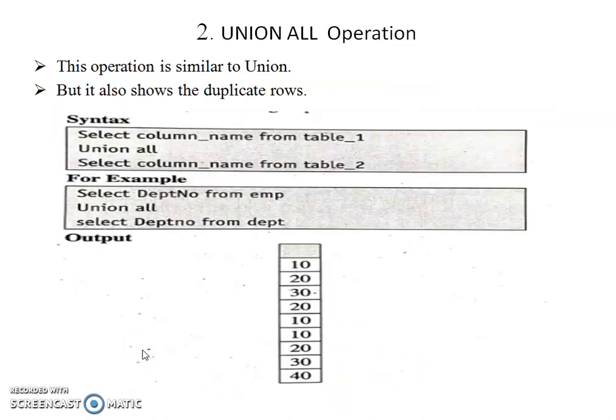Now we discuss UNION ALL. The UNION ALL operator returns all rows selected by either query, including duplicates. This operation is similar to UNION but it also shows duplicate rows. For example: SELECT department_number FROM employee UNION ALL SELECT department_number FROM department. The output shows the duplicated rows as well.